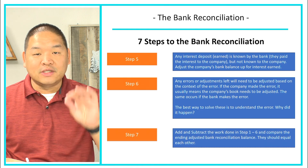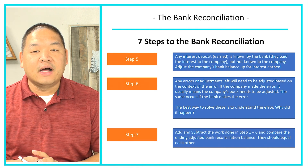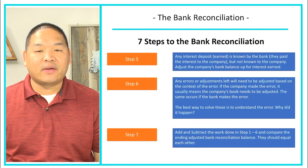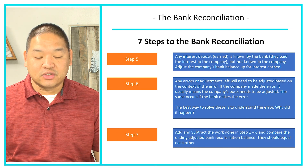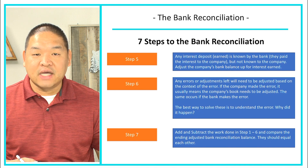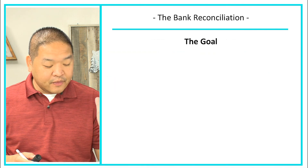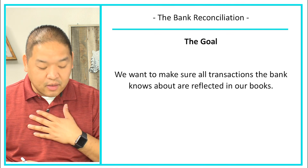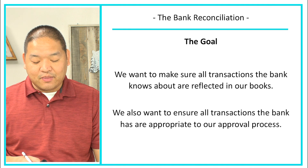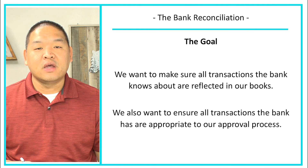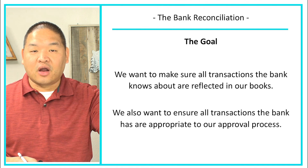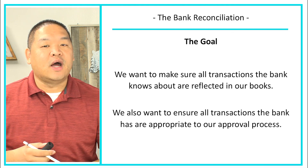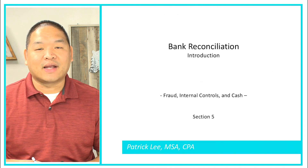In step number seven, we're going to add or subtract all of the columns based on the adjustments made in steps one through six. Hopefully at the end of the bank reconciliation, they should equal out — that's our goal. We want to make sure all the transactions the bank knows about are reflected in our books, and that all transactions the bank has are appropriate to our approval process. We know they're appropriate when our general ledger has that transaction in our books; otherwise it wouldn't be in our books if it wasn't approved.